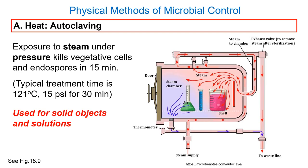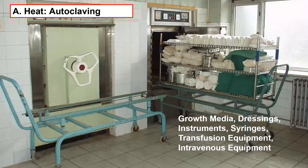Some plastics will totally warp in the autoclave, while others are designed to withstand autoclaving — in labs, there are plastics specifically designed for this. You can put bedding, surgical equipment, growth media, lab waste — all sorts of things in autoclaves. They come in many shapes and sizes. The standard treatment is about 30 minutes, sometimes longer to make sure all the steam gets in. Anything that can't get wet shouldn't go in either.